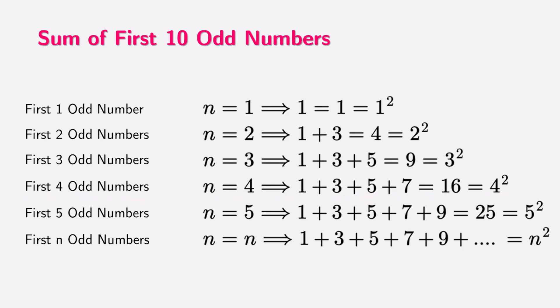Finally, we have seen that the sum of first 10 odd numbers is 100. Can you generalize this pattern for first n odd numbers? Yes, it is n square. The sum of first n odd numbers is always n square.